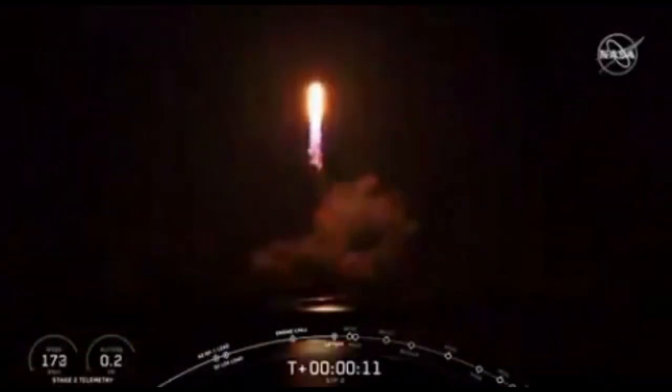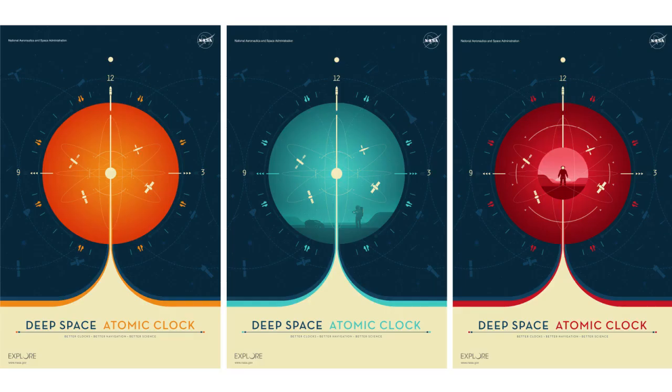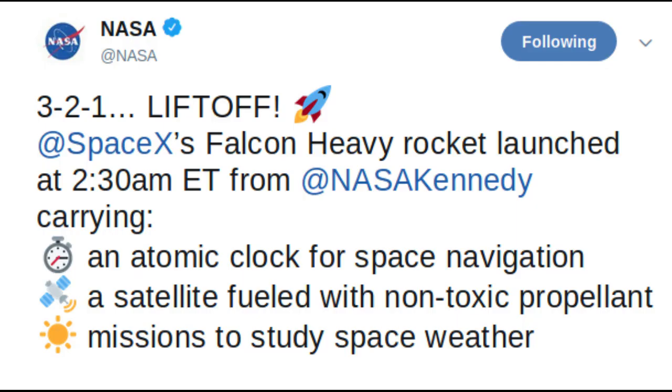NASA's Deep Space Atomic Clock is flying on the Orbital Testbed Satellite, which launched on the SpaceX Falcon Heavy rocket with around two dozen other satellites.